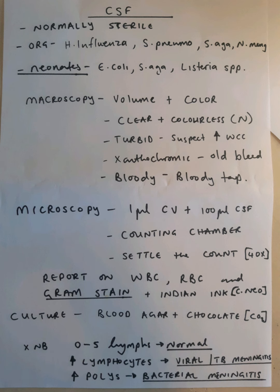For culture, we culture on blood agar and chocolate agar for 24 hours at 37 degrees Celsius anaerobically. Normally, we should not see any red blood cells, neutrophils, or lymphocytes in the CSF. Usually there are 0 to 5 lymphocytes, but an increased number of lymphocytes suggests viral or TB meningitis. An increase in neutrophils or polymorphonuclear neutrophils suggests bacterial meningitis. Thank you for watching.